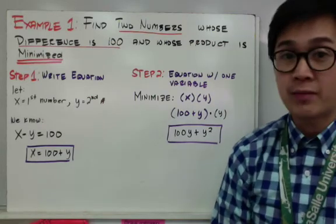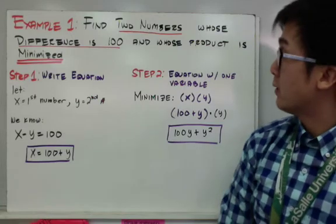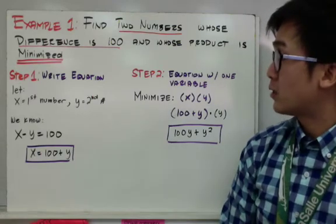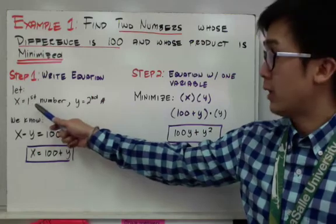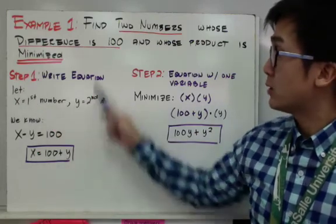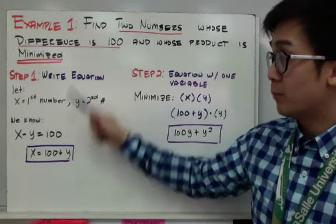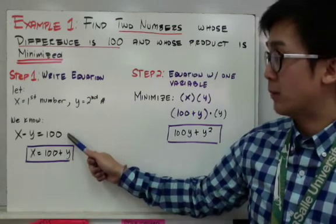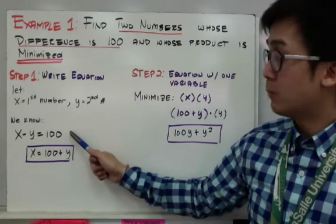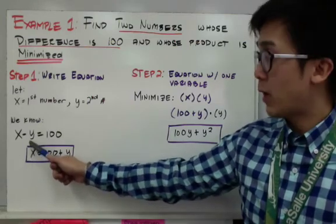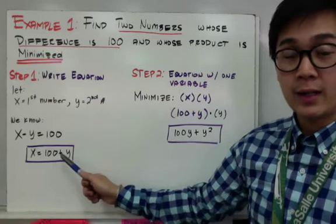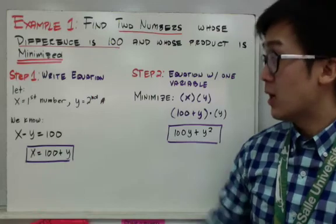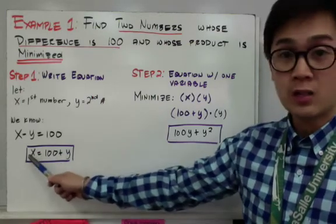Yung una nating step is to write the equation based on the problem. We need to find two numbers whose difference is 100. Let x be our first number and let y be our second number. Two numbers whose difference is 100 is simply x minus y equal to 100. Since kailangan nating gumamit ng isang variable lang, i-isolate natin si y para meron tayong x equal to 100 plus y. Lagi tayong gumagamit ng one variable kapag nagso-solve tayo ng optimization problem.